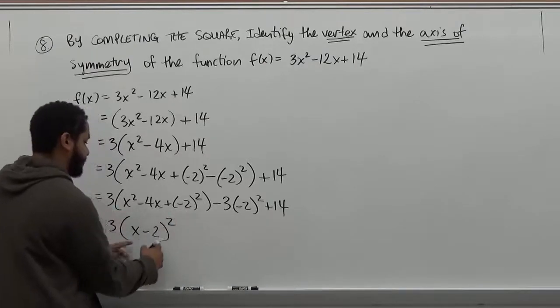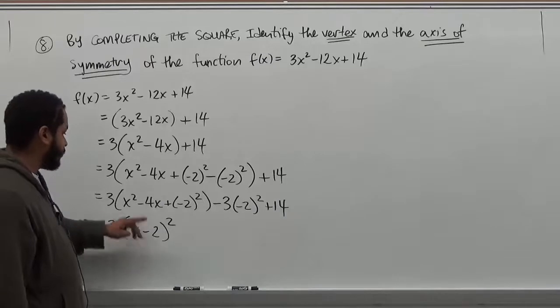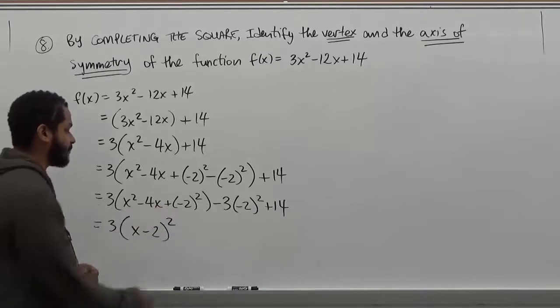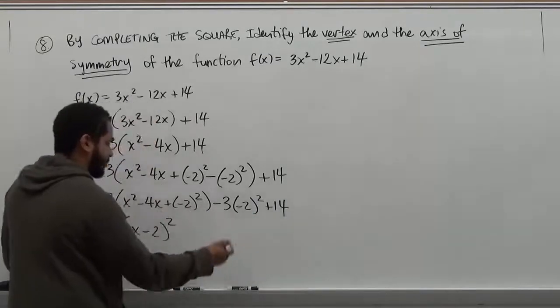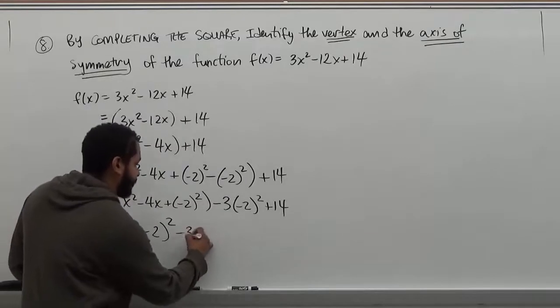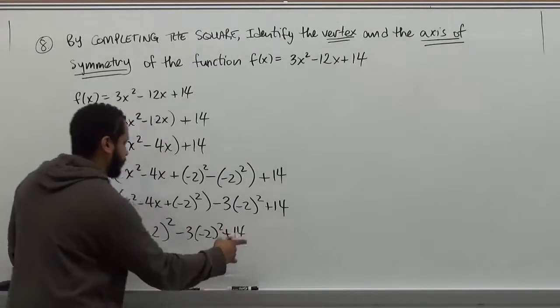Then you're going to square this inside the parenthesis. Because when you expand this, you get exactly what this value gives you. As far as everything else goes, you can start evaluating. So this -3, -2² + 14, we can kick off.